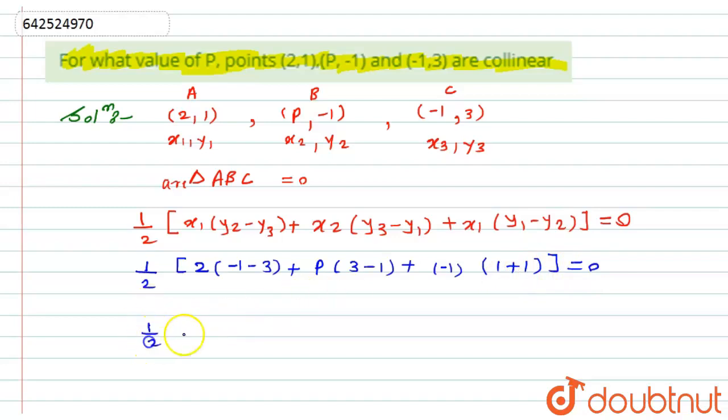Now after further solving, I will get that is this will be -1-3 will be -4, and -4×2 is -8. And now 3-1 will be 2, and 2 multiplied by P will be 2P.